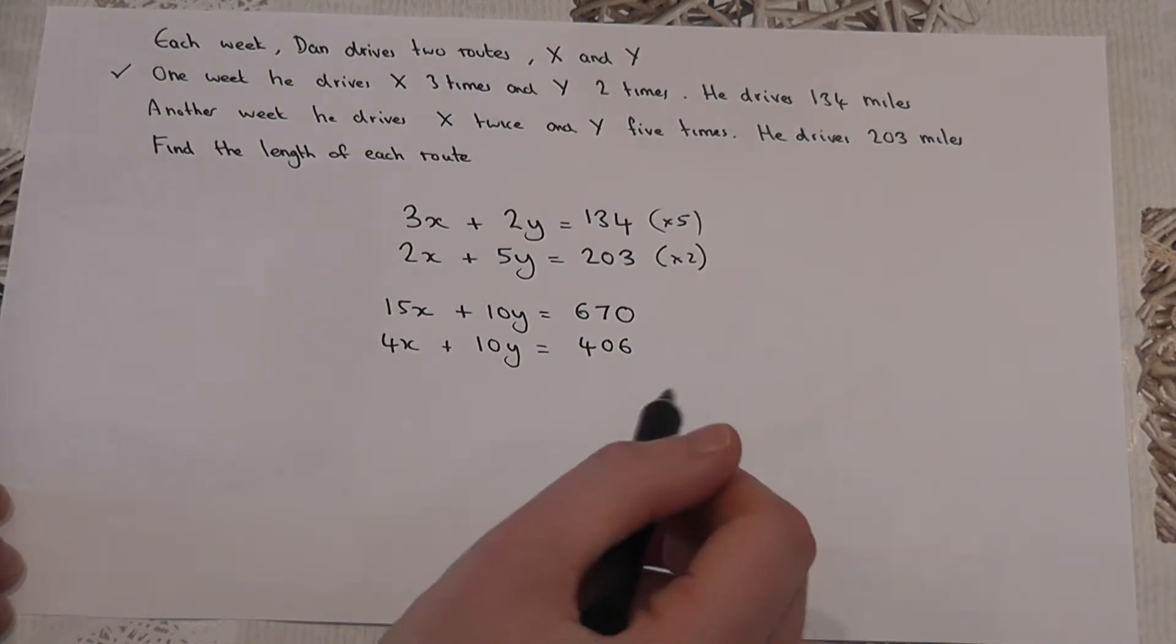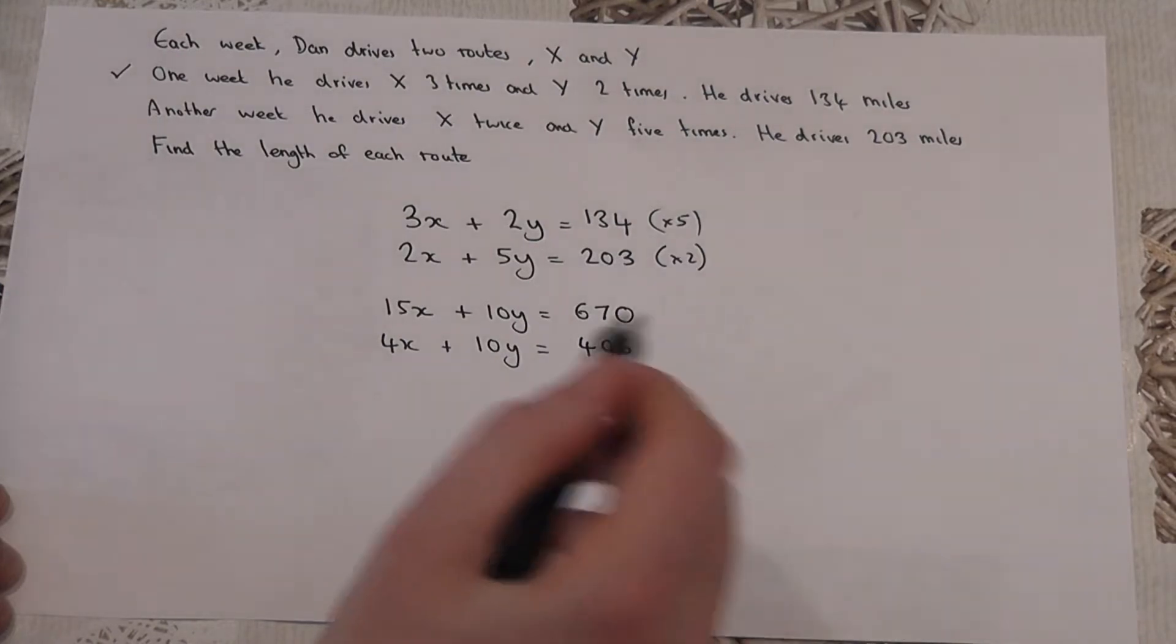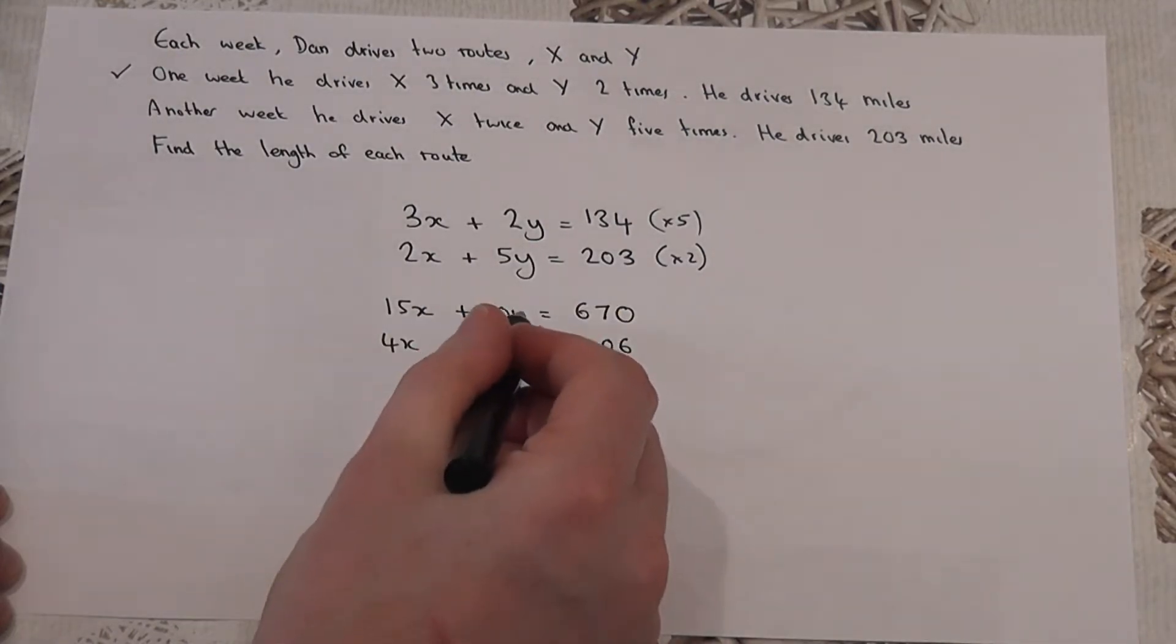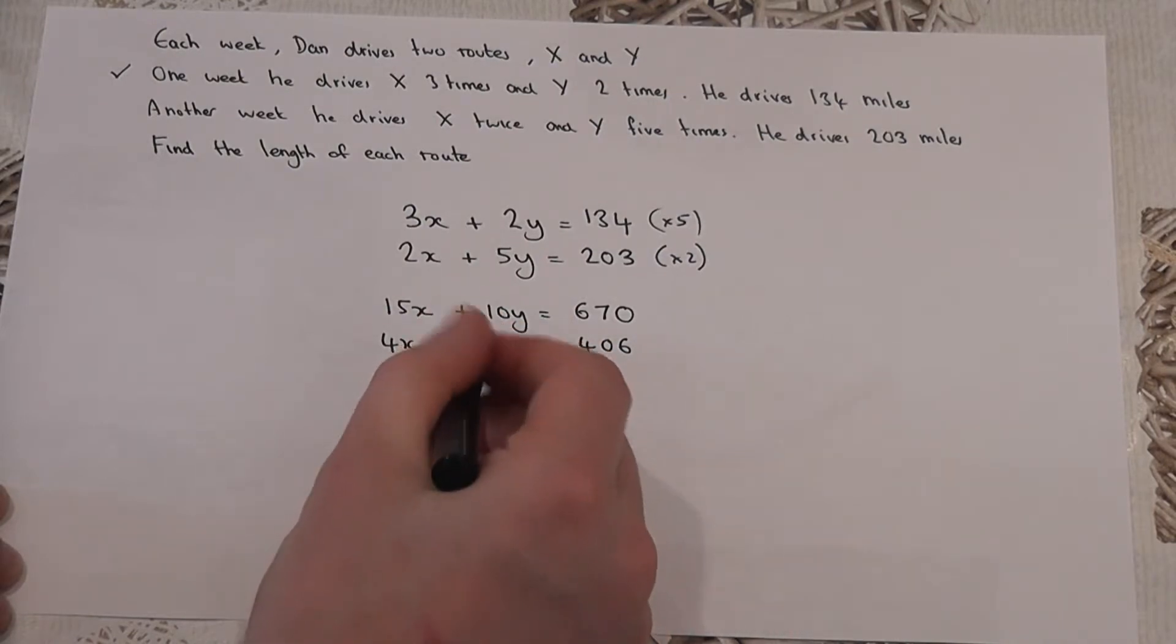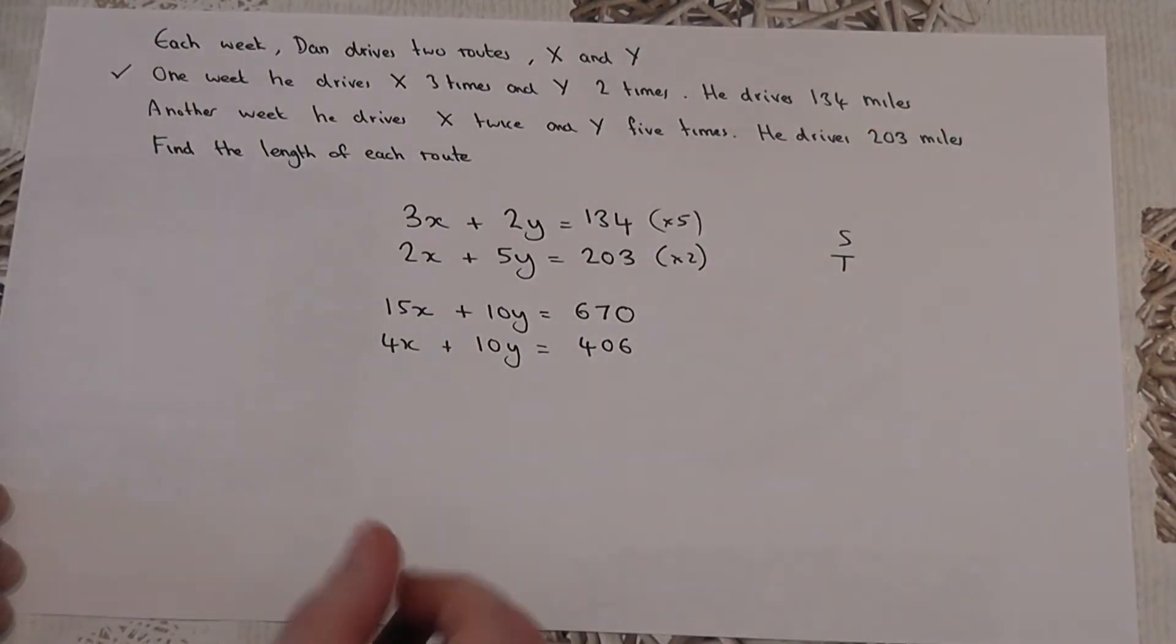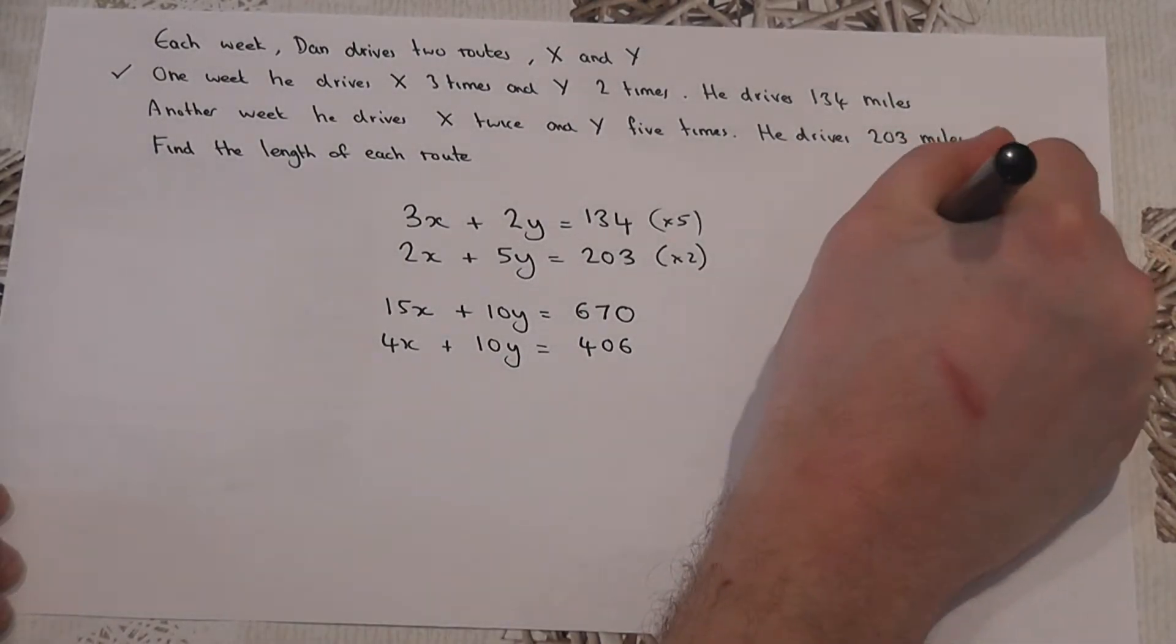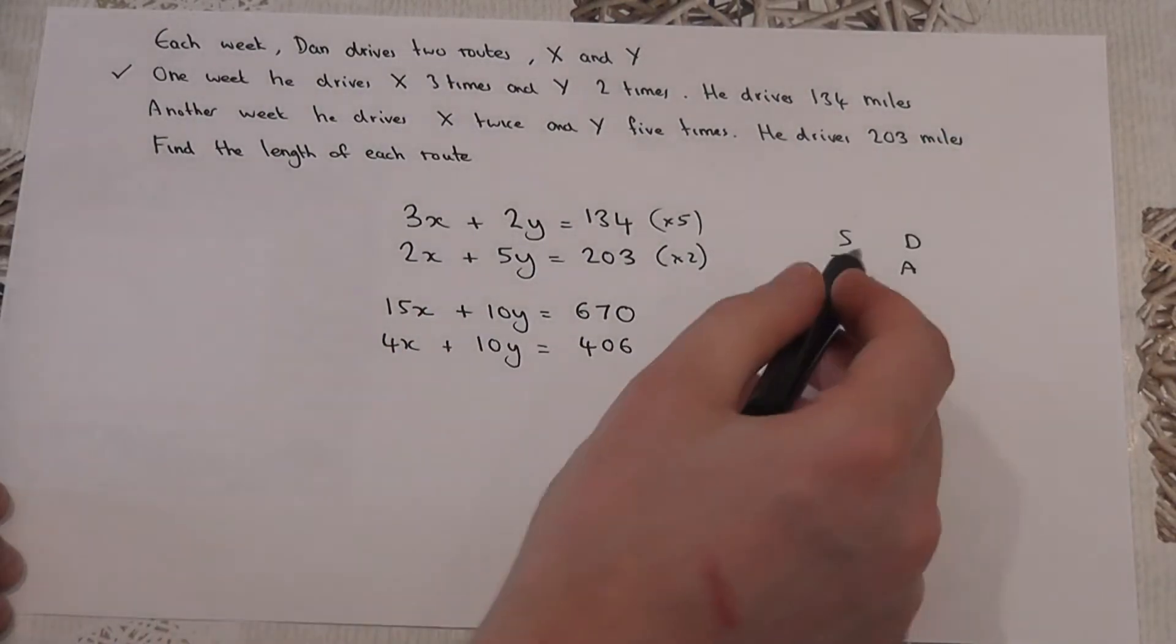This lets us find out one of the variables. And the rule is, you look at the letter with the same number next to it. And if it's got the same sign, you take away. If it's got a different sign, we add. Same number, same sign, we take away.